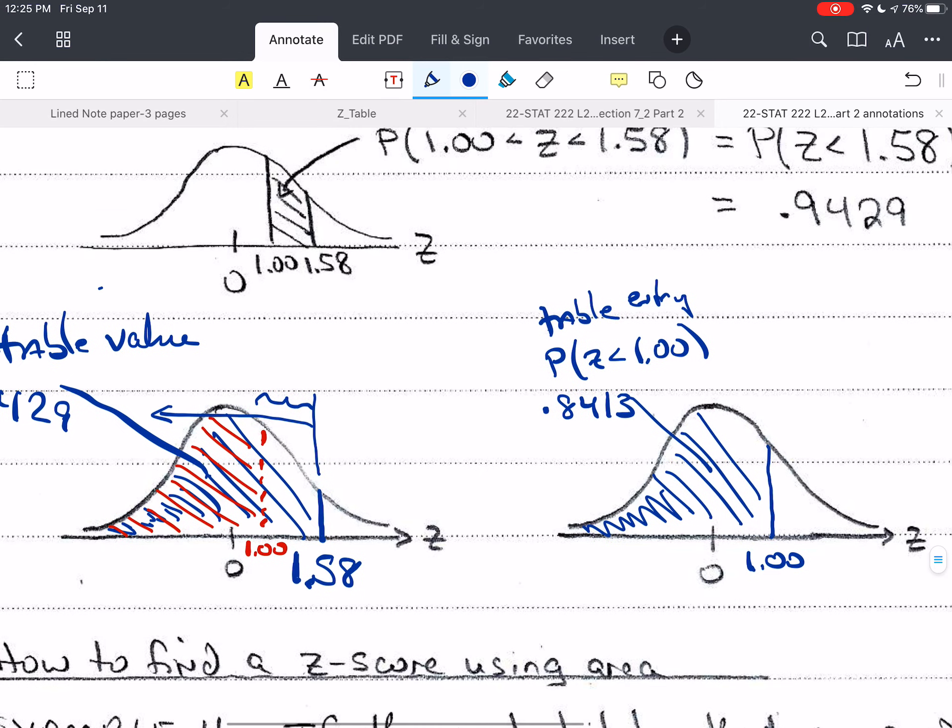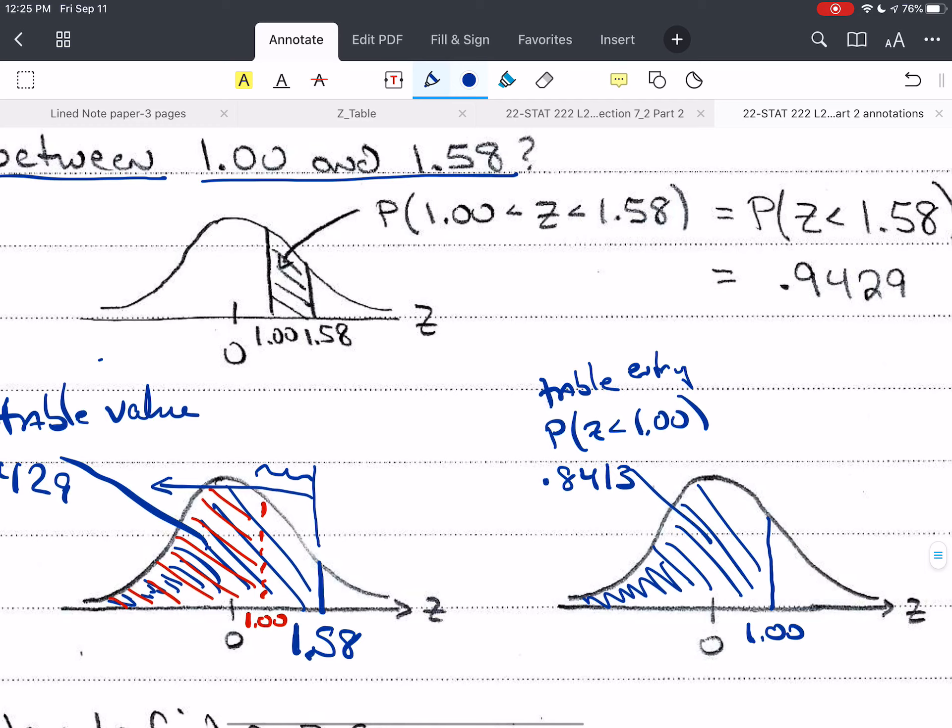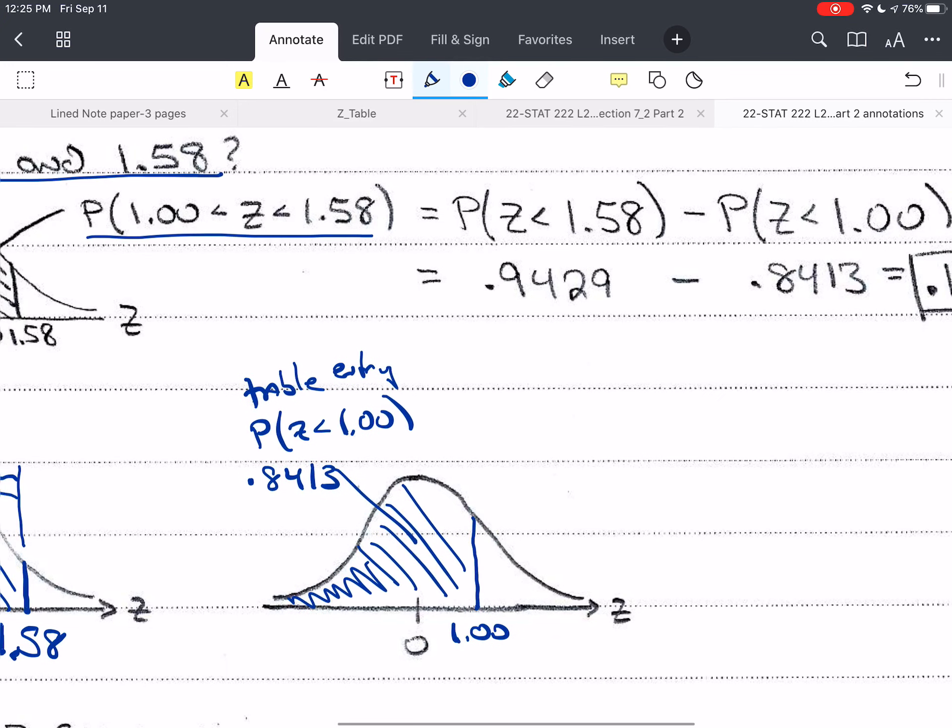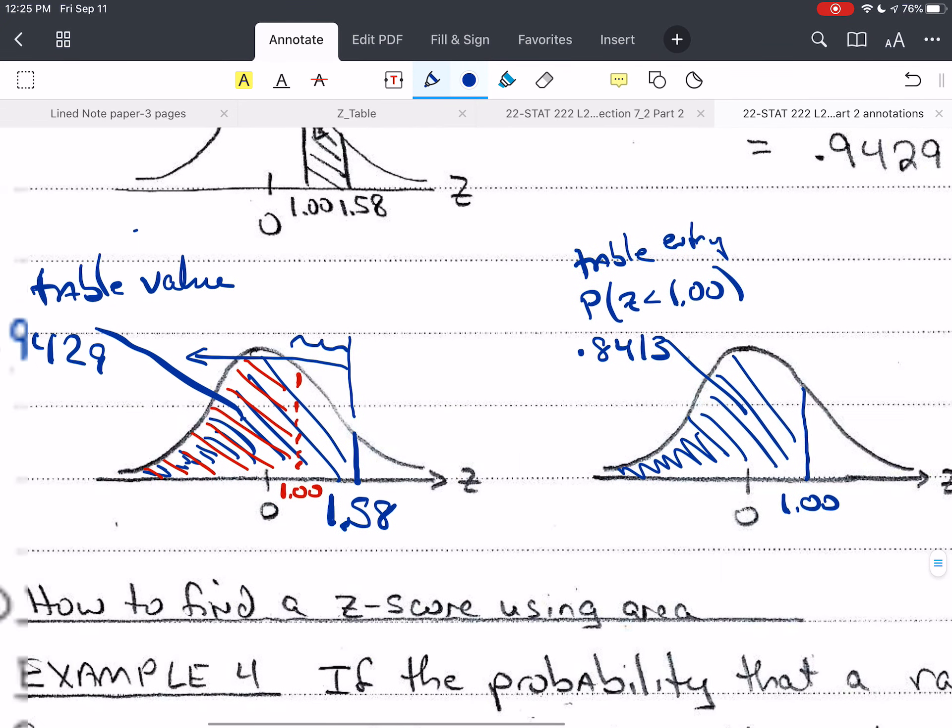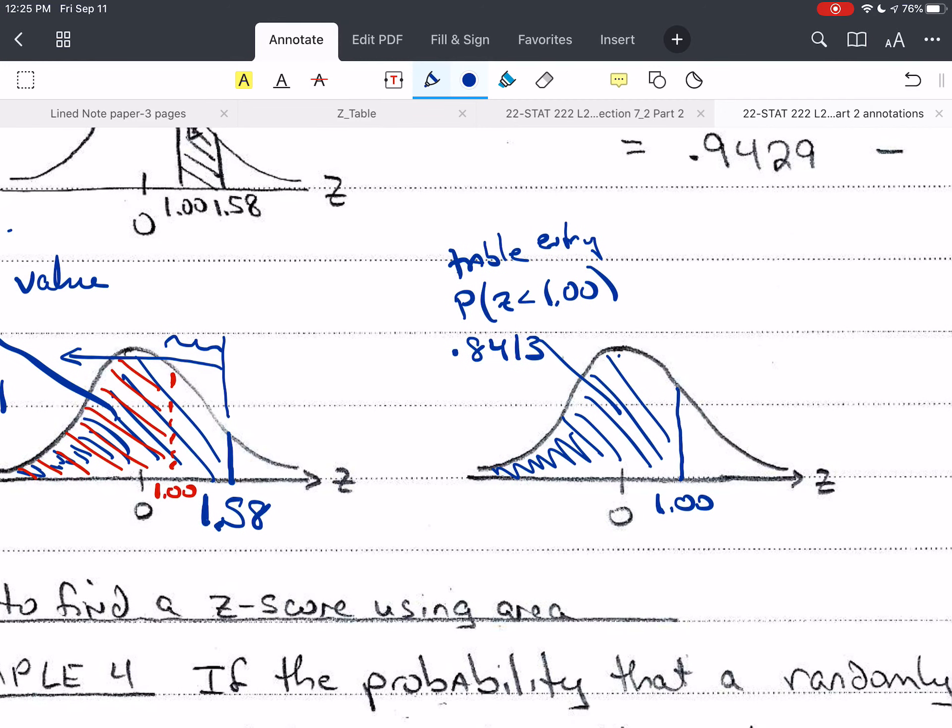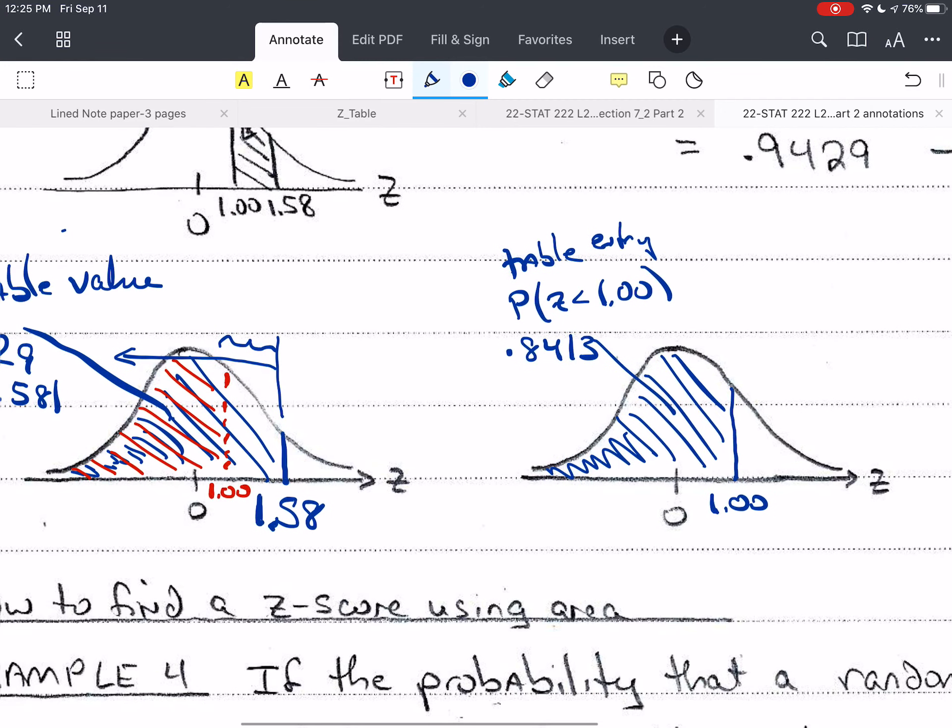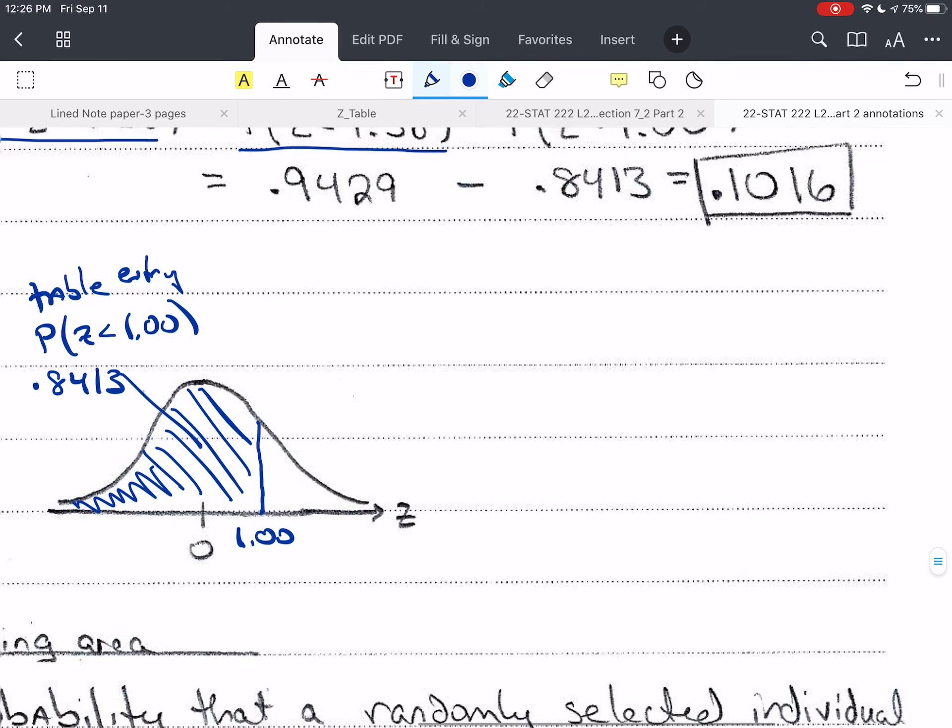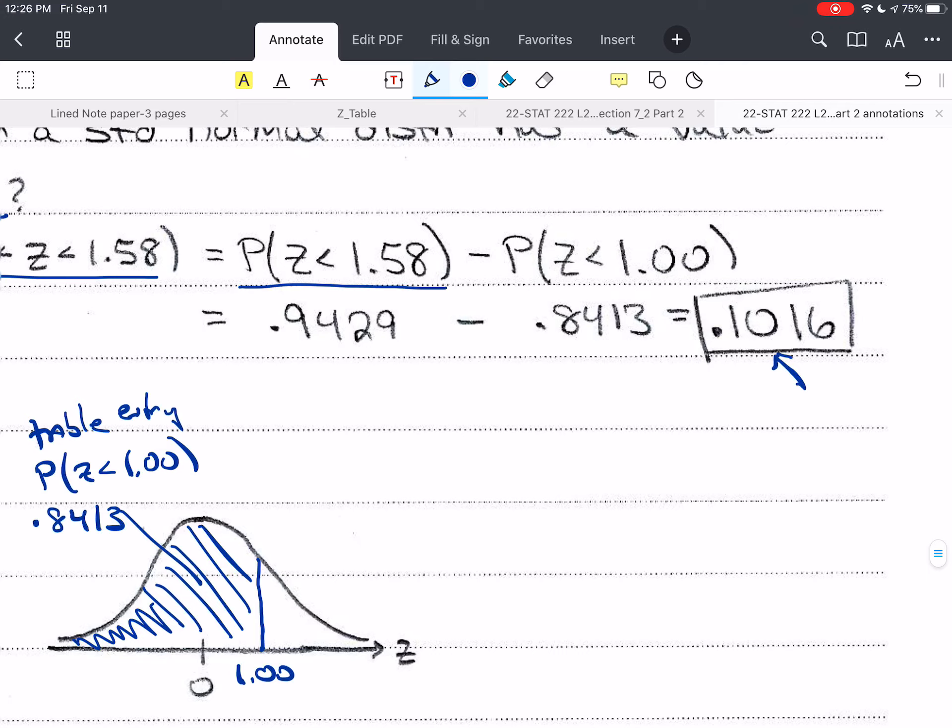So this value over here will be 0.8413. So to find this value that I want up here, I want to point out that it's the probability that z is less than 1.58. So we took that area that's in blue, all that shaded area, and we subtracted off the area that's less than 1, which in this is the red. And we subtract those two values, and we get 0.1016. This is the answer.